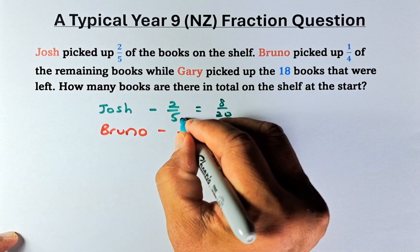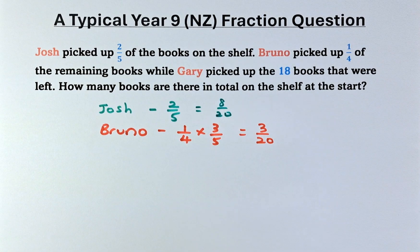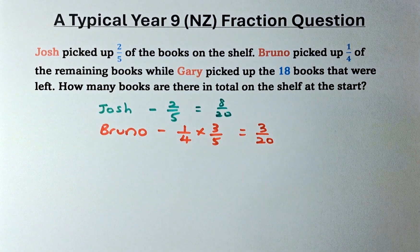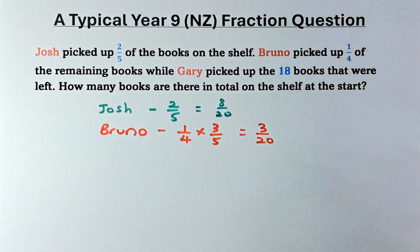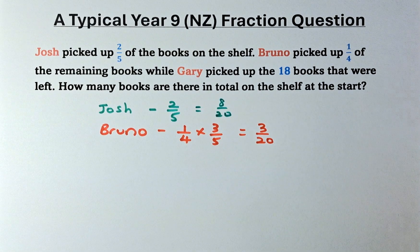Because what you do, you multiply by four at the denominator, you multiply by four at the numerator. So now we got a story now. So Josh has picked up eight over twenty and Bruno has picked up three over twenty.